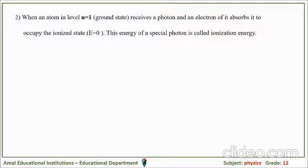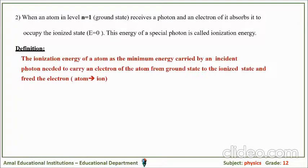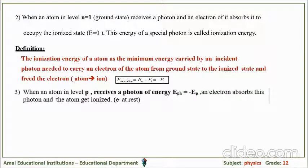When an atom in the ground state (n=1) receives a photon and an electron of it absorbs enough energy to occupy the ionized state, this energy is a special photon called the ionization energy. The ionization energy is defined as the minimum energy carried by an incident photon needed to carry an electron from the ground state to the ionized state, freeing the electron — the atom becomes an ion and the electron is at rest. When an atom in level p receives a photon whose energy E equals −E_p, an electron absorbs this photon and the atom gets ionized.